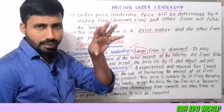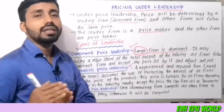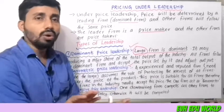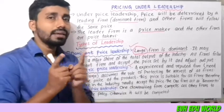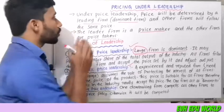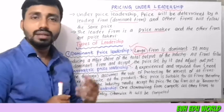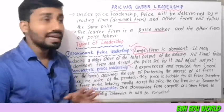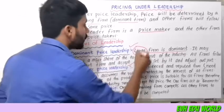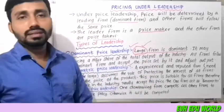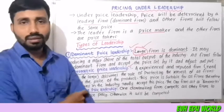The dominant firm is fixed as the large firm in the industry. All firms follow the dominant firm. The first element is price leadership, then followers, and the key point is that a large firm is dominant — this is dominant price leadership.